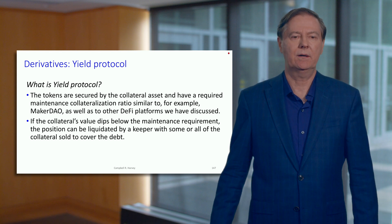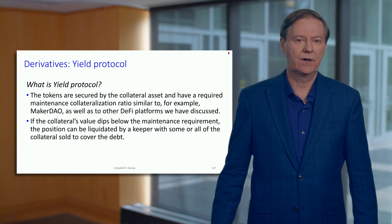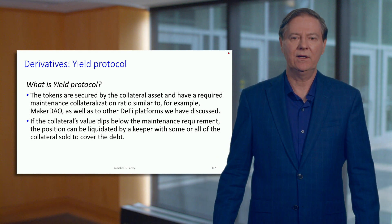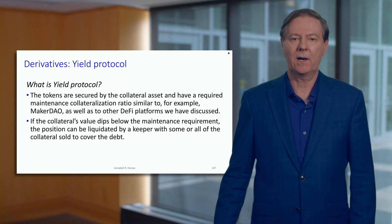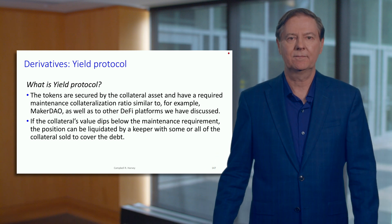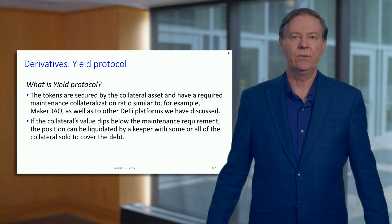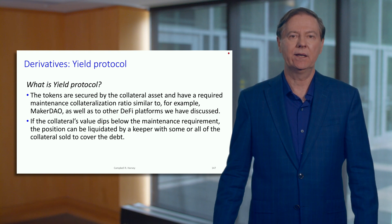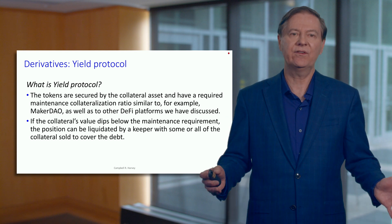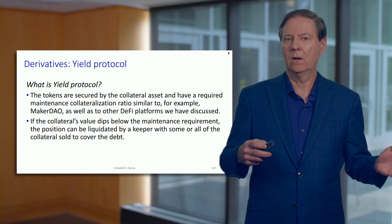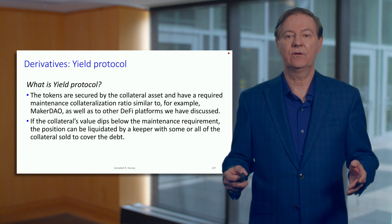We'll have tokens that are secured by a collateral asset, so we need collateral like all of the DeFi protocols. There's going to be a maintenance margin, as we've discussed with MakerDAO. If we drop below the collateralization ratio, the keepers are going to come in and liquidate, essentially paying back the debt on the liquidation. It is a little curious as to how we're going to get a fixed rate in terms of borrowing, and that's what we're going to explore next.